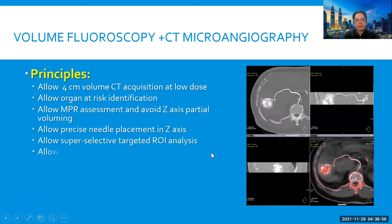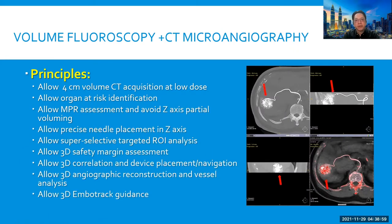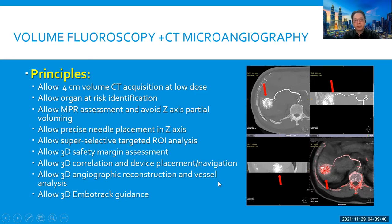The principle of volume CT fluoroscopy and CT microangiography involves 4-cm volume CT acquisition at low dose. It allows organ-at-risk identification, MPR assessment, and avoidance of Z-axis partial volume artifact. It allows precise linear placement in the Z-axis, super-selective target assessment, 3D safety margin assessment, 3D coordination, device planning and navigation — especially for multiple devices — as well as 3D angiography reconstruction providing 3D EmbolTrack guidance.